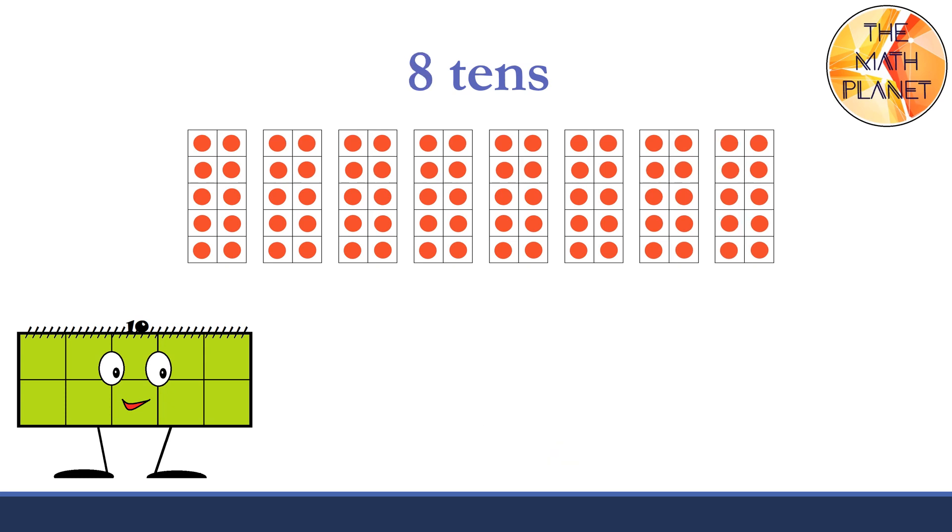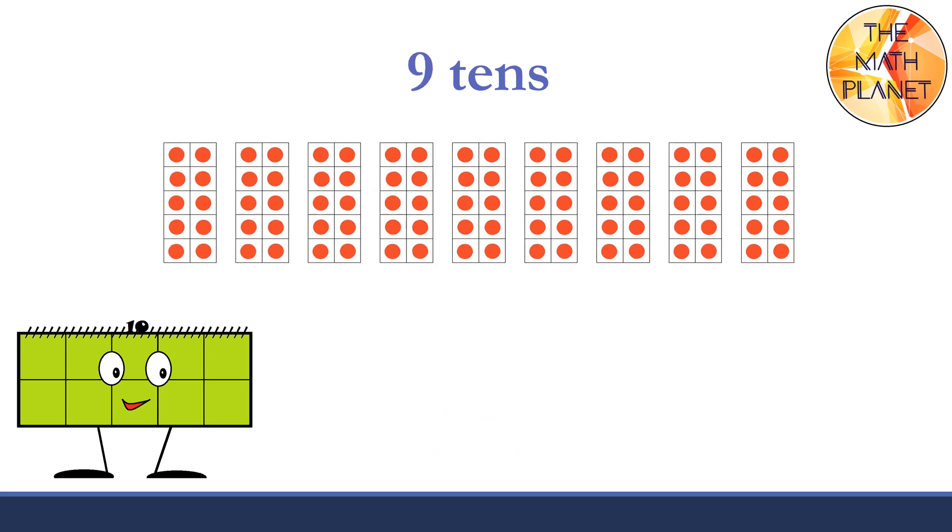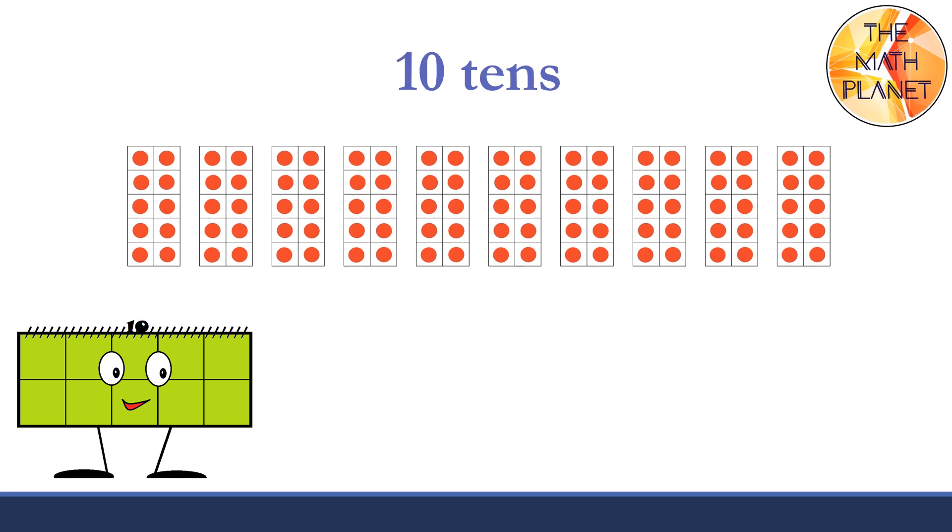Eight groups of tens make 80. E-I-G-H-T-Y, 80. Nine tens make 90. N-I-N-E-T-Y, 90. Ten tens make 100. O-N-E-H-U-N-D-R-E-D, 100.